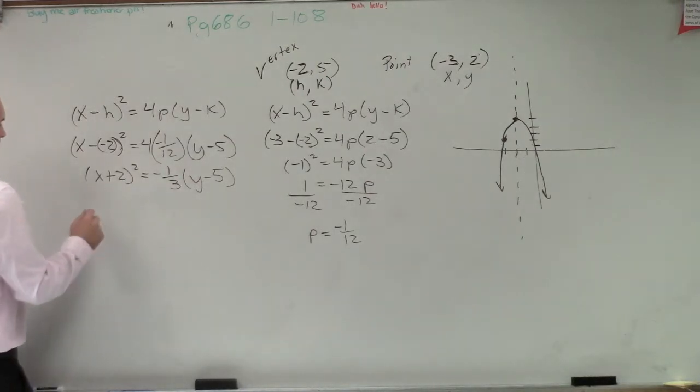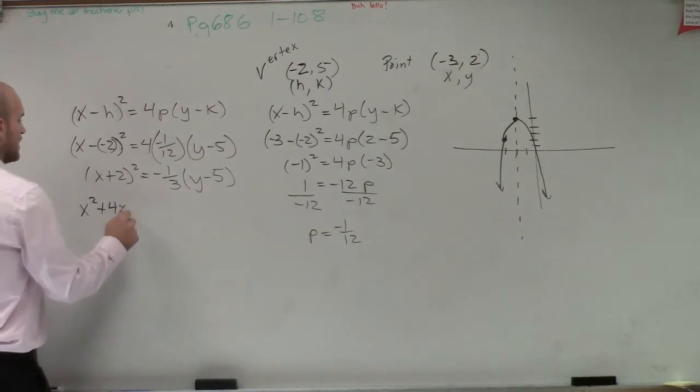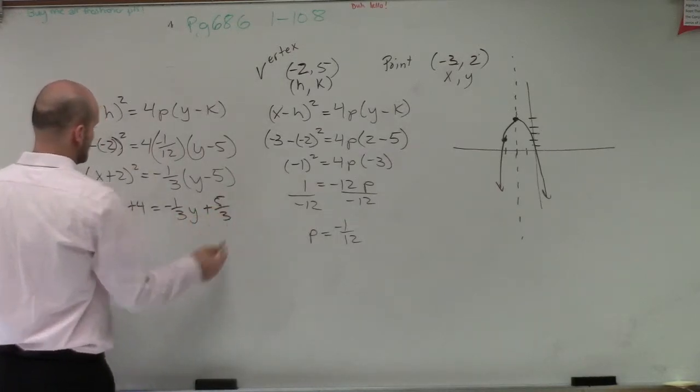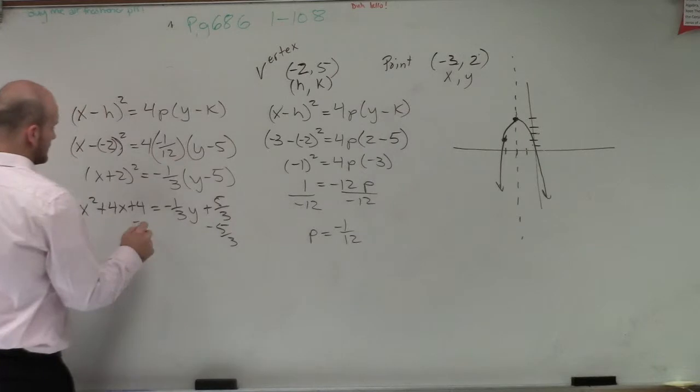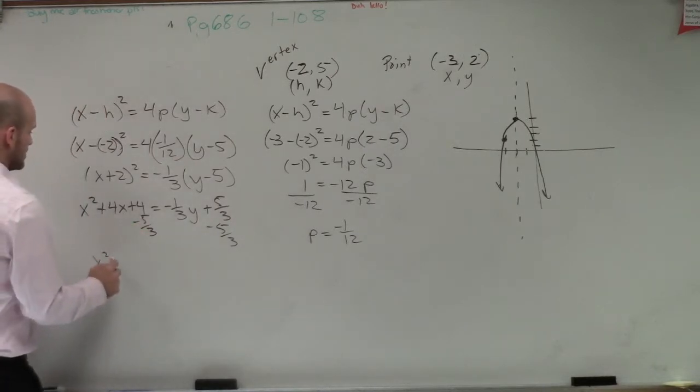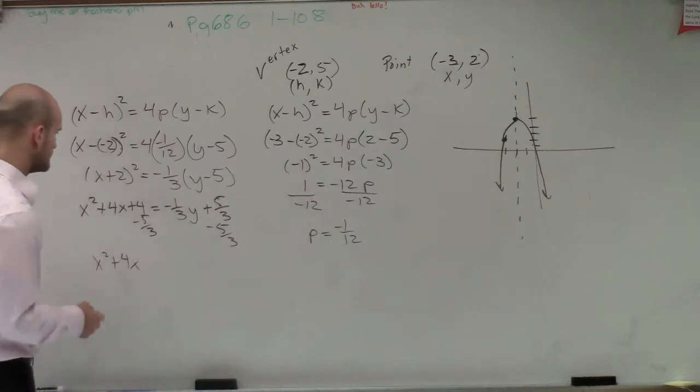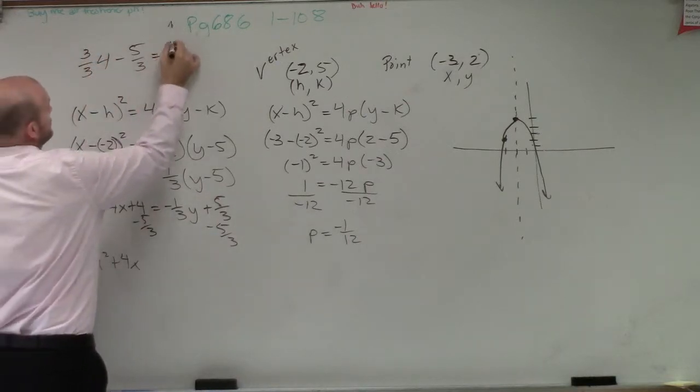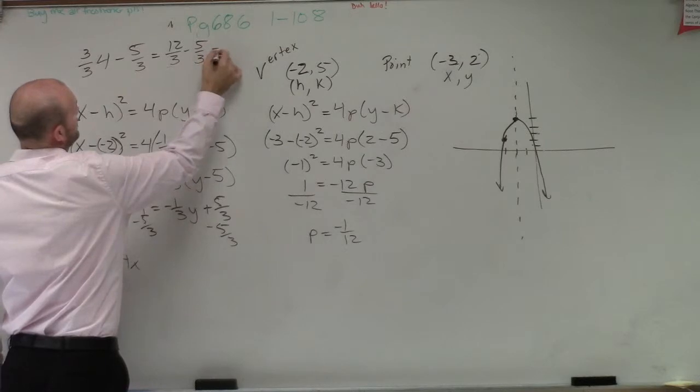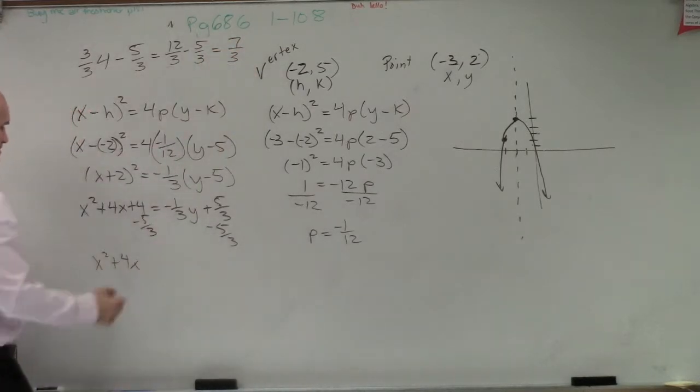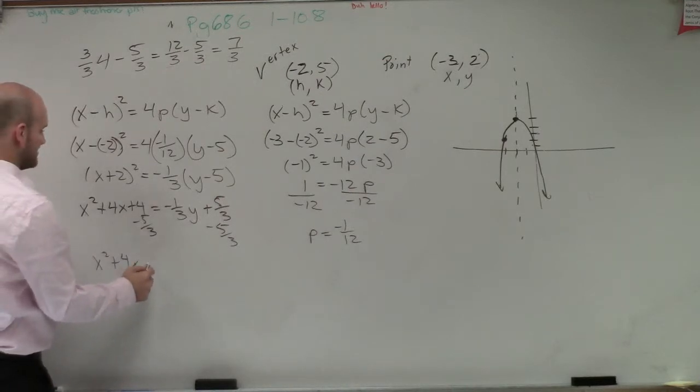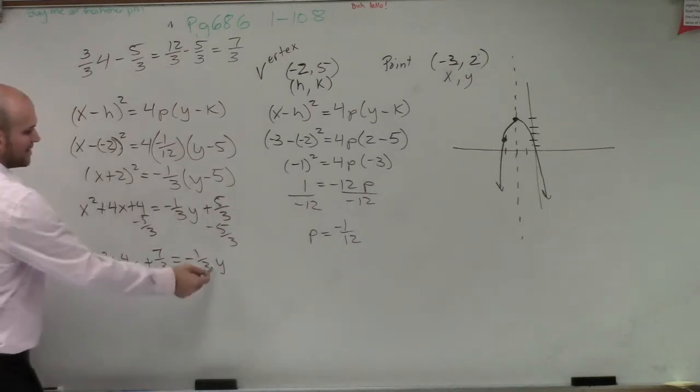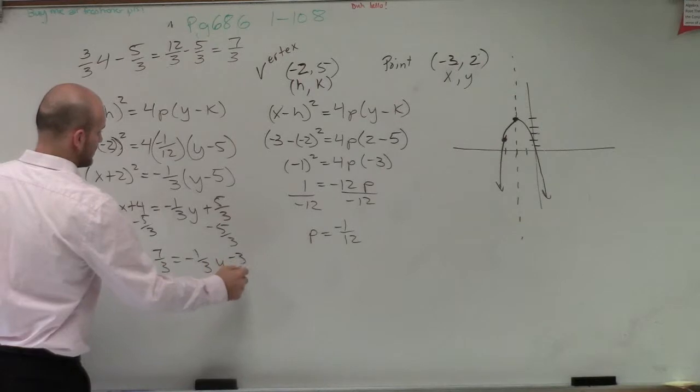They might have you multiply this out, which would be x squared plus 4x plus 4 equals negative 1 third y plus 5 thirds. And then you'd have to subtract 5 thirds. So you'd have x squared plus 4x. So 4 minus 5 over 3. That means I'm going to multiply this by 3 over 3. So that equals 12 over 3 minus 5 over 3, which equals 7 over 3. Plus 7 thirds equals negative 1 third y.